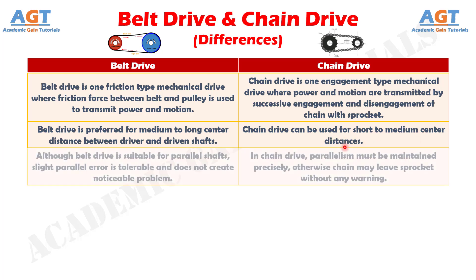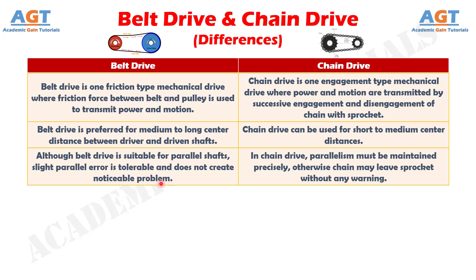Number 3: Although belt drive is suitable for parallel shafts, slight parallel error is tolerable and does not create a noticeable problem. Whereas, in chain drive, parallelism must be maintained precisely, otherwise the chain may leave the sprocket without any warning.